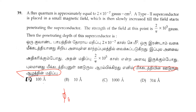The flux quantum Φ₀ is 2 × 10⁻⁷ Gauss centimeter squared, and the first critical field Hc1 is (2/π) × 10⁵ Gauss. The relation between the first critical field and penetration depth is: Hc1 = Φ₀ divided by (π λ²), so λ² equals Φ₀ divided by (π × Hc1).